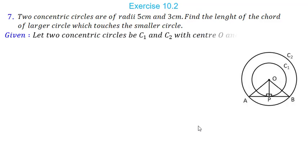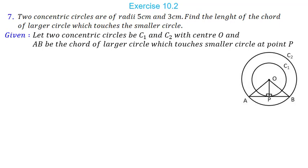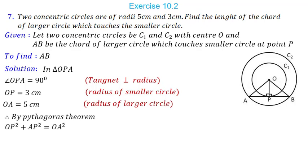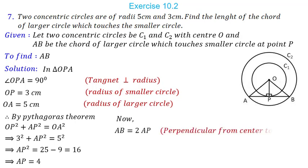So let us start. Consider two concentric circles C1 and C2 with center O. AB is a chord of the larger circle which touches the smaller circle at point P, and we have to find AB. In triangle OPA, angle OPA is 90 degrees as the tangent is perpendicular to the radius. OP is 3 cm and OA is 5 cm. By Pythagoras theorem, OP² + AP² = OA², giving AP = 4 cm. Now AB = 2 × AP, so AB = 8 cm.